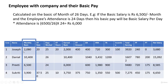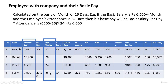The monthly salary and days worked for all four employees are given. Joseph is present for 25 days, Daniel has taken no leave, Priti has taken 2 leaves, and Sukriti has taken 1 leave. Based on this attendance formula, the earned basic salary of each employee is calculated.